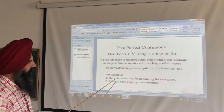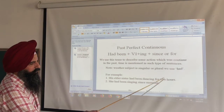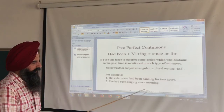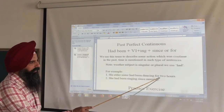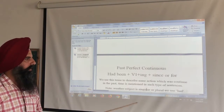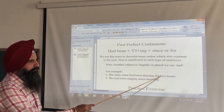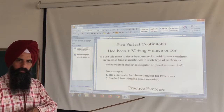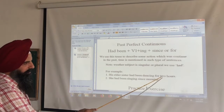First example: 'His elder sister had been dancing for two hours.' Here the action — dancing — was continuing in the past and the time period, two hours, is mentioned. This is why it is Past Perfect Continuous and not Past Continuous, because a period of time is mentioned.